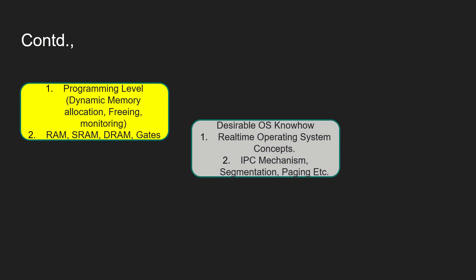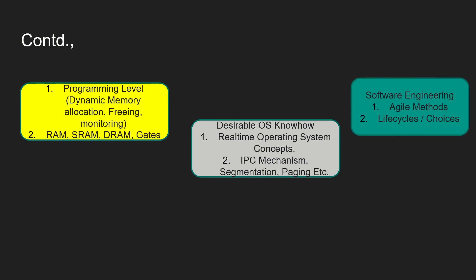Learn the mechanisms that are very important in terms of operating systems — the IPC mechanism, segmentation, and paging. These are very fundamental concepts and should be very clear with no doubt. Software engineering questions are also pretty common in interviews these days — the agile methods, the life cycles, the choices, how to build systems. You will have to be strong in these fundamentals.